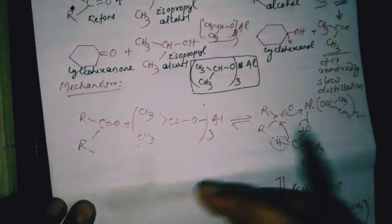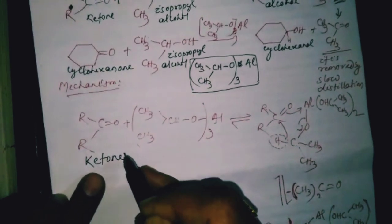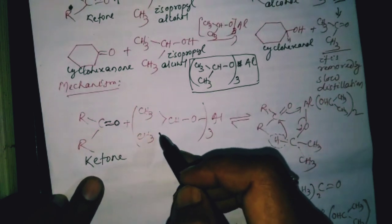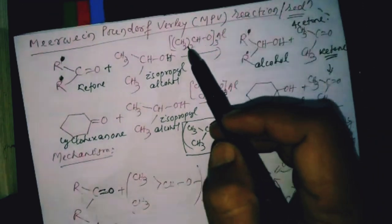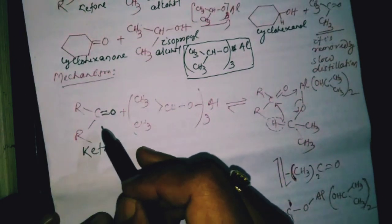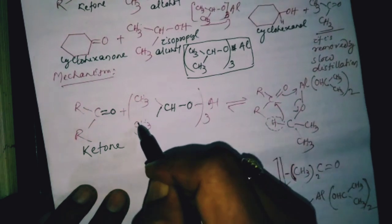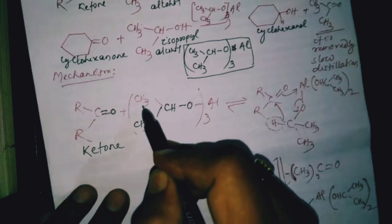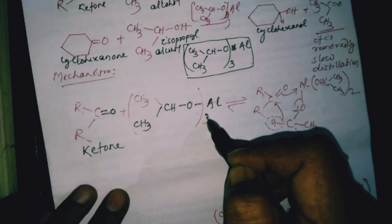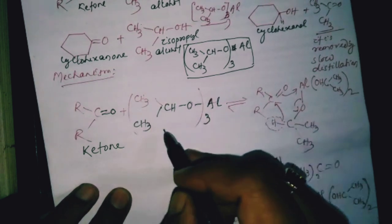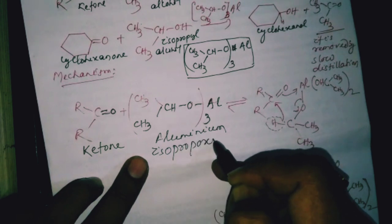Next, the mechanism. We have taken R-CO-R, a ketone — that is C double bond O. Now we are going to add aluminum isopropoxide. Aluminum isopropoxide is formed from isopropyl alcohol: remove the H atom and substitute it with an aluminum atom. Since the valence of aluminum is 3, three isopropoxide groups are attached to Al — giving Al(OCH(CH3)2)3. This is aluminum isopropoxide.